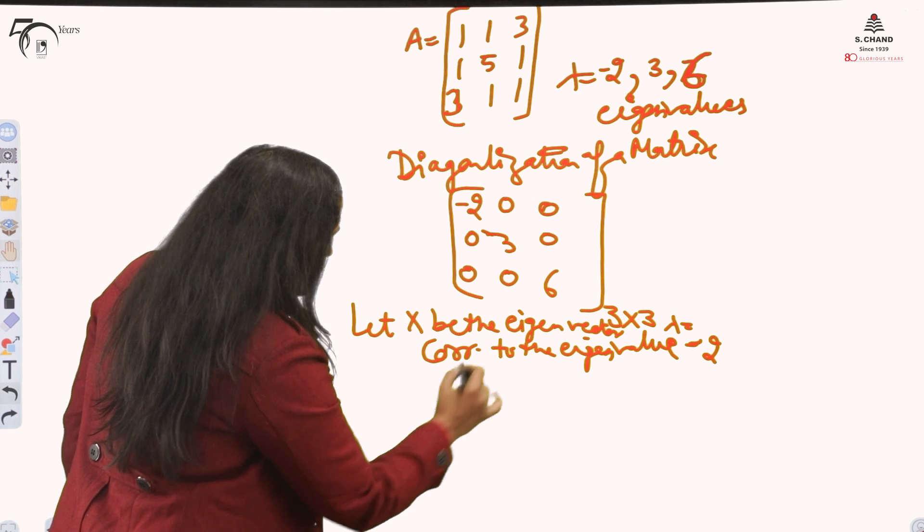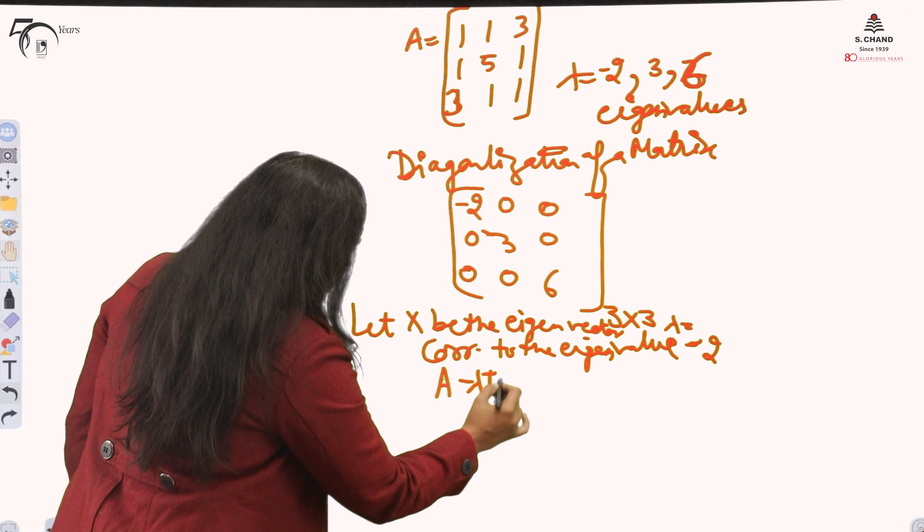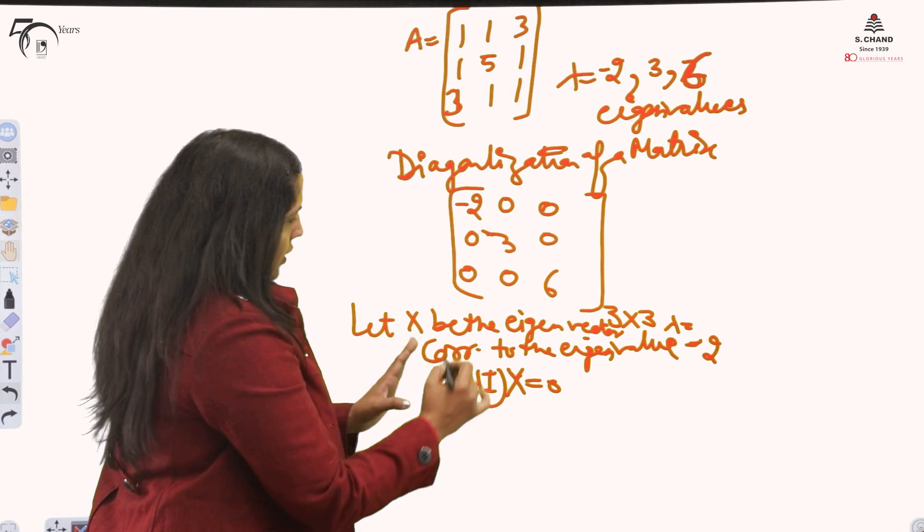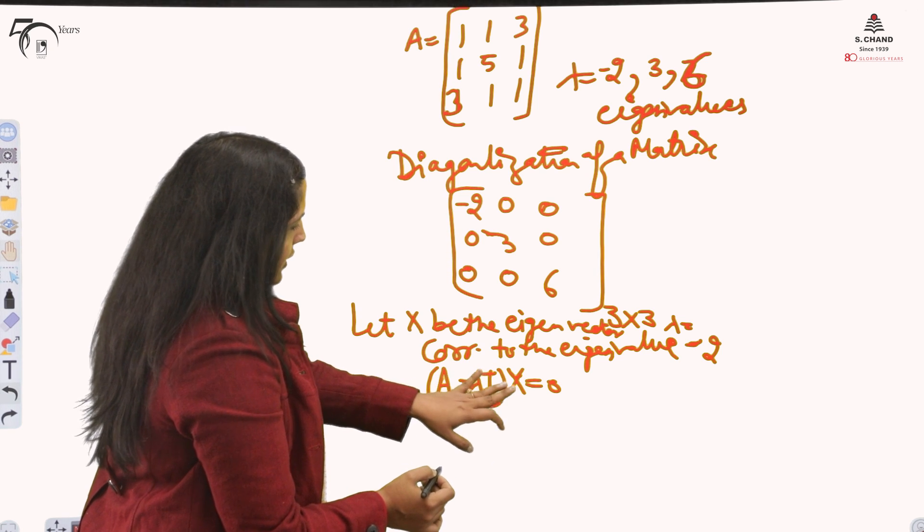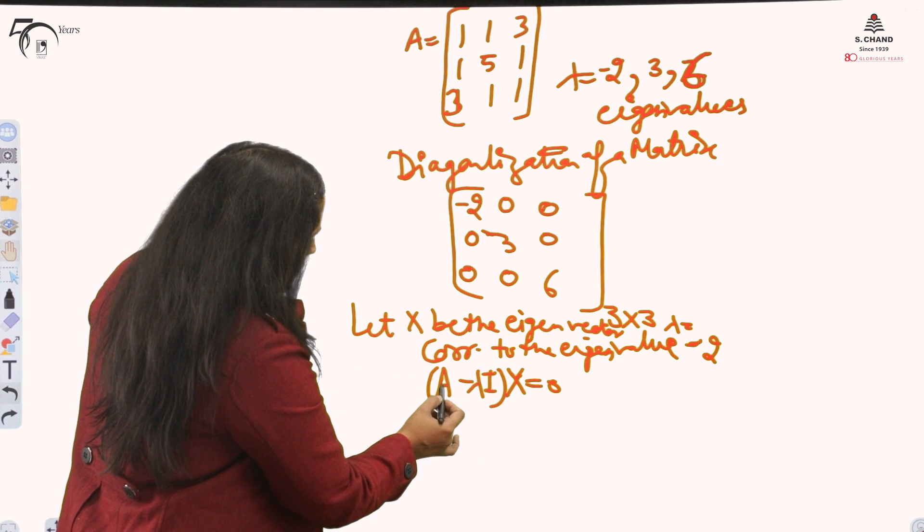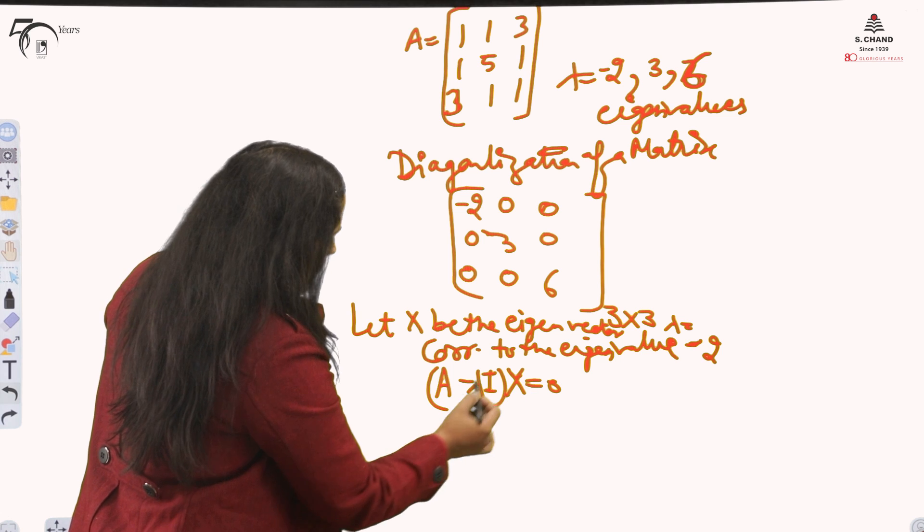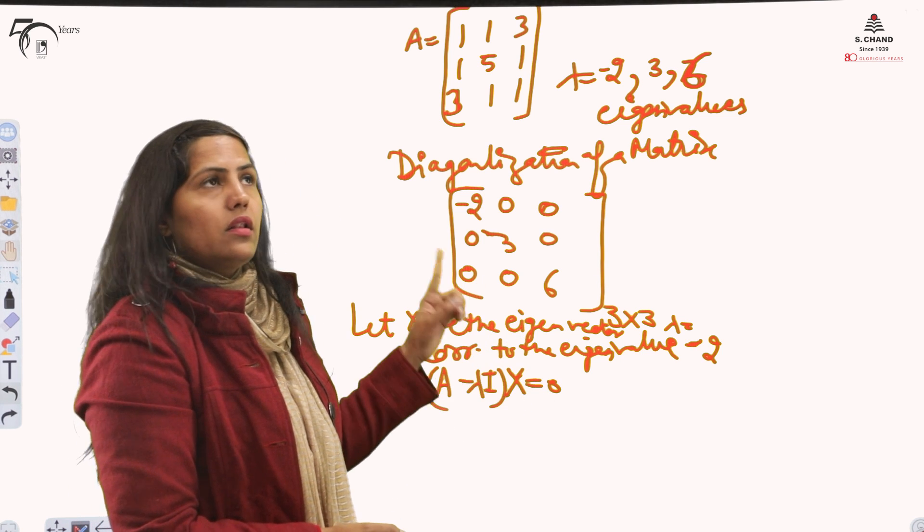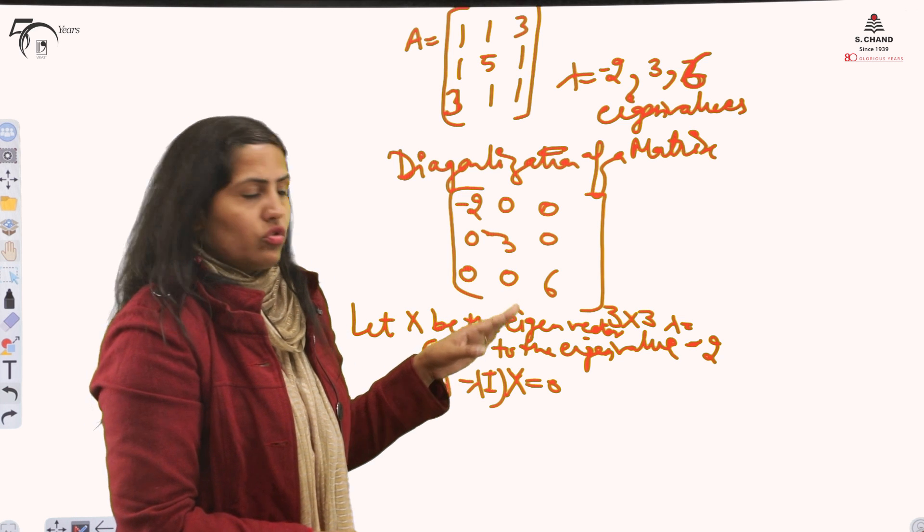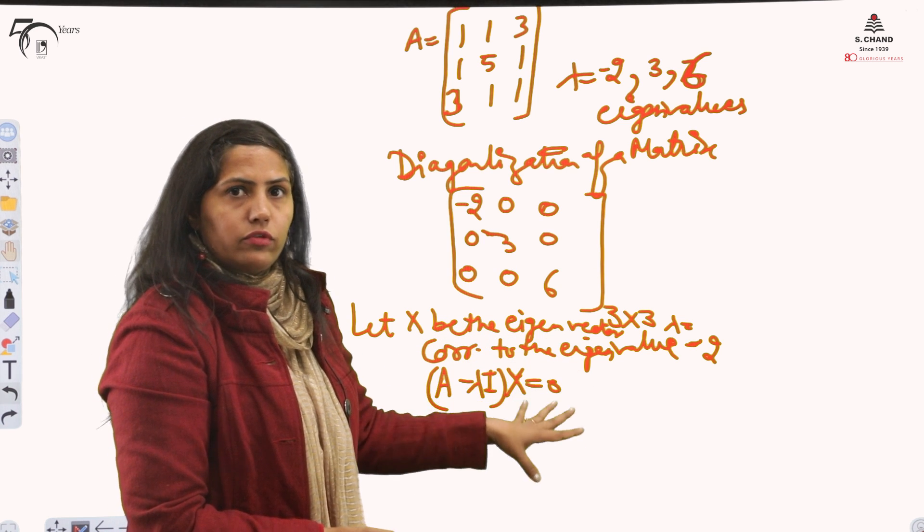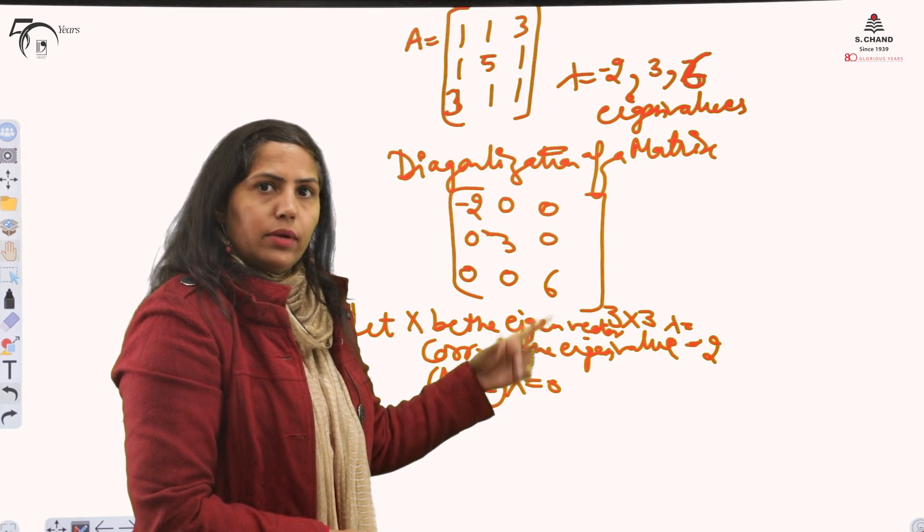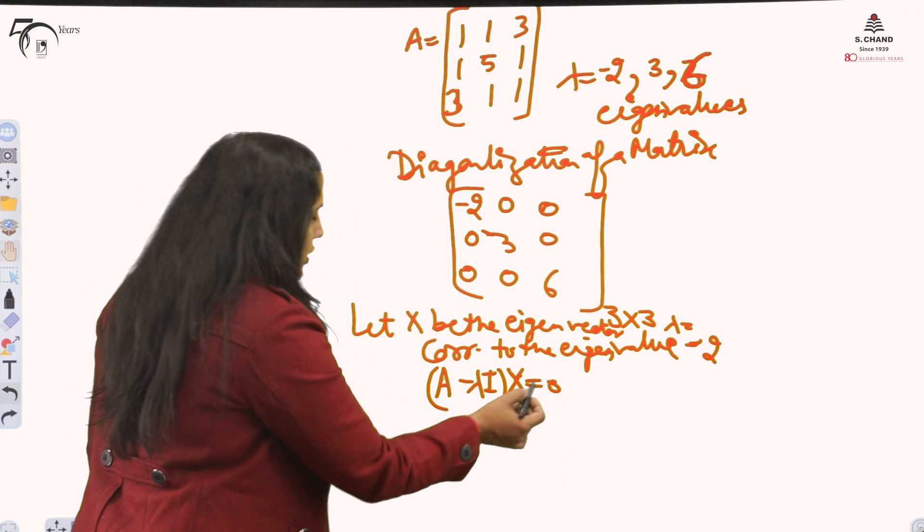Consider this equation. We have to remember if we are finding the eigenvectors: (A minus lambda I) times x equals 0. This is a homogeneous equation also. We did this in third or fourth lecture of the matrices. So you can refer how we solve the homogeneous part. Exactly the same thing I will be doing.